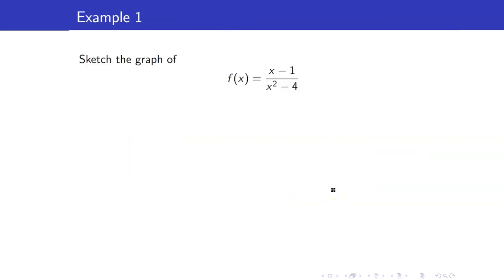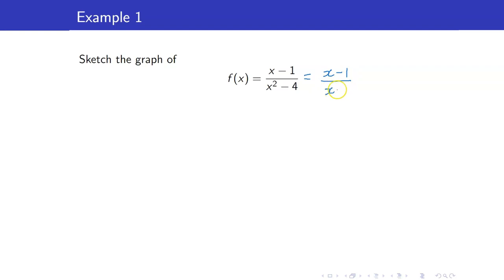Let us start with our first example. We want to sketch the graph of f(x) equals x minus 1 all over x squared minus 4. Recall that we always have to factor both our numerator and denominator when dealing with rational functions. So we write this as x minus 1 over (x minus 2)(x plus 2).